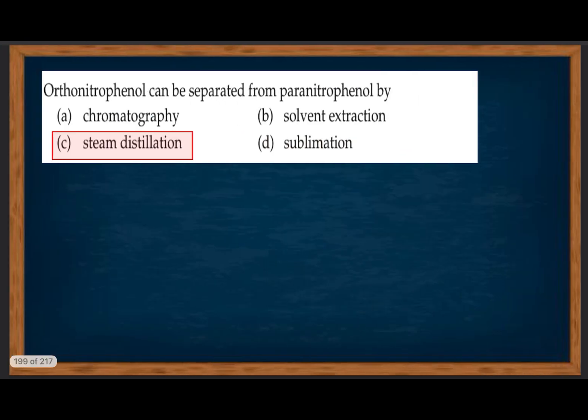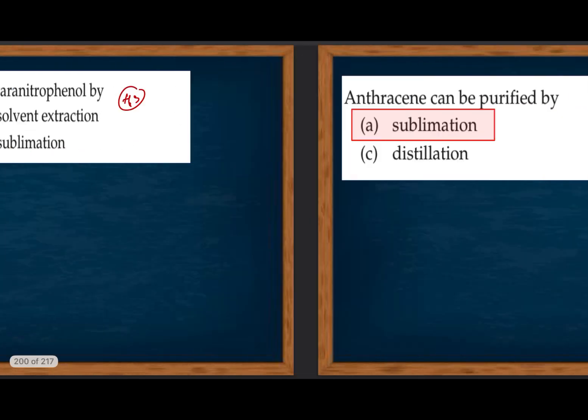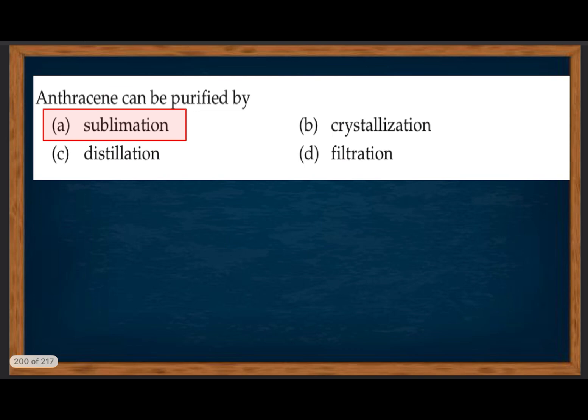Ortho-nitrophenol can be separated from para-nitrophenol by steam distillation. Anthracene and naphthalene — anthracene can be purified by sublimation.